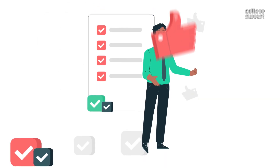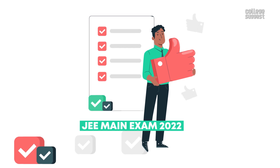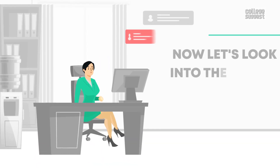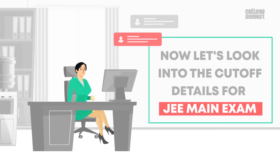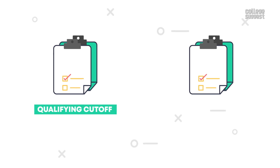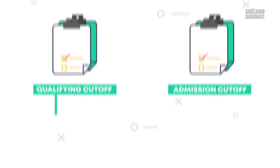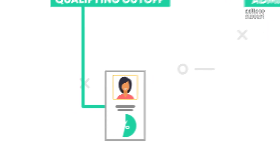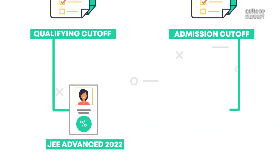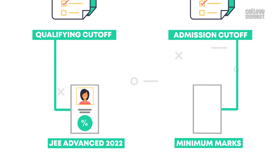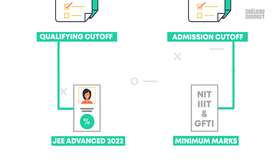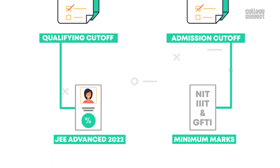Prepare well and good luck to all students appearing for the JEE Main Exam 2022. Now let's look into the cutoff details. NTA releases two types of cutoffs: the qualifying cutoff, which is the score required by candidates to be eligible, and the admission cutoff, which is the minimum marks required to be eligible for admission into NITs, IIITs, and GFTIs, as well as other participating institutes.